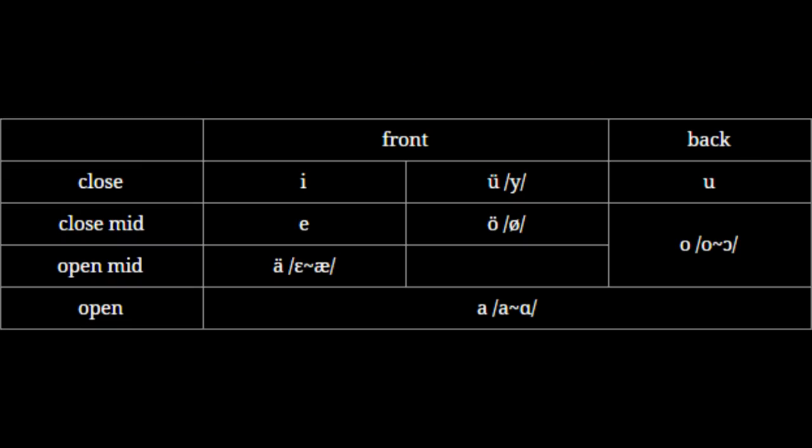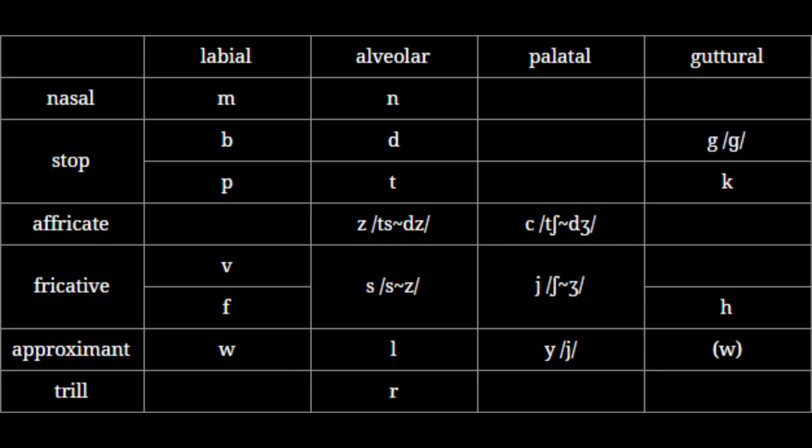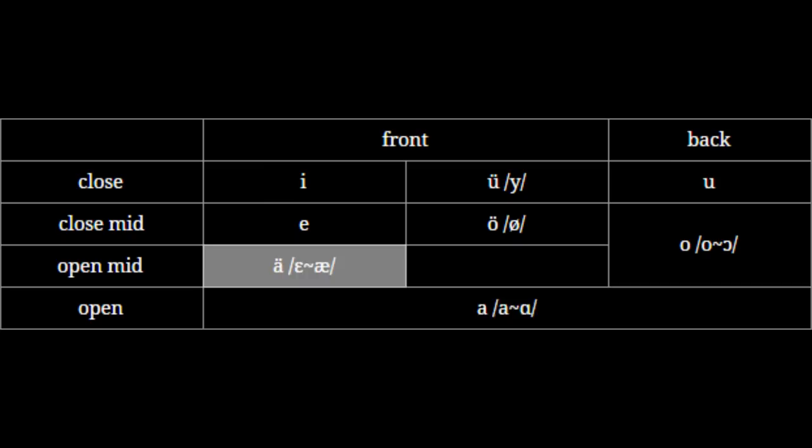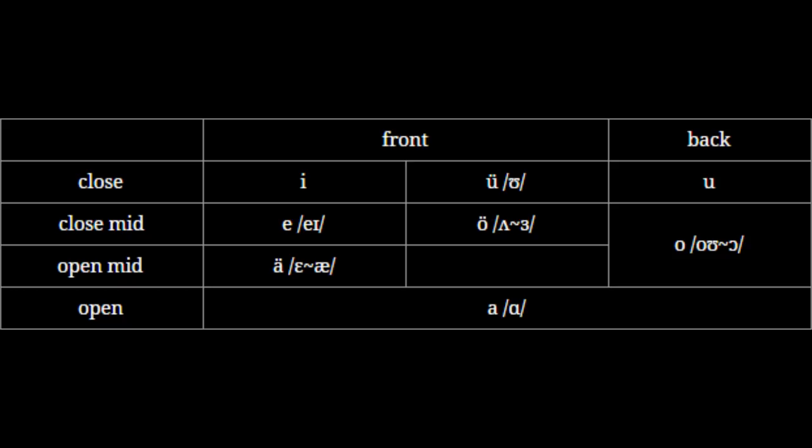Volapük's vowels... Come on, Schleyer, you were off to such a good start with those consonants. This vowel inventory is pretty transparently based on German and French, both of which are relatively vowel-heavy languages. You don't really need to look hard to find languages that are incompatible with this. Sure, you can kind of map it to English, but for languages like Mandarin and Spanish, you just can't. Eight vowels is simply too many. And yes, I know it's possible to learn how to make new sounds, but for an auxiliary language, you really shouldn't need to.